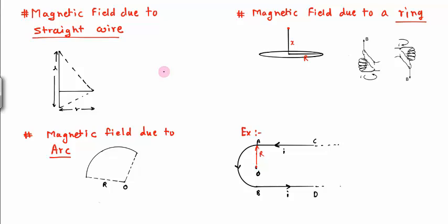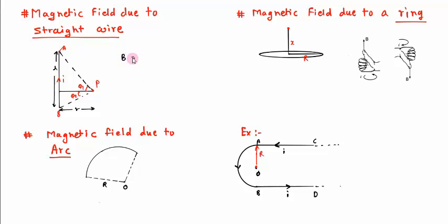Now we'll derive a few formulas for magnetic field of different configurations using Biot-Savart Law. For a current-carrying straight wire AB carrying current I, we need to find the magnetic field at point P which is at distance r from the wire. Point P makes angle θ₁ at point A and angle θ₂ at point B. The magnetic field is given by B = (μ₀I / 4πr)(sin θ₁ + sin θ₂), and its direction is into the page.